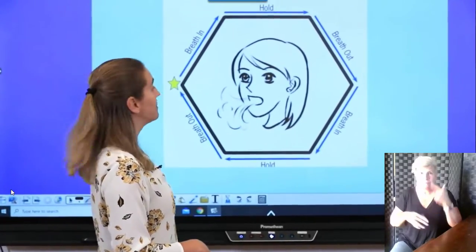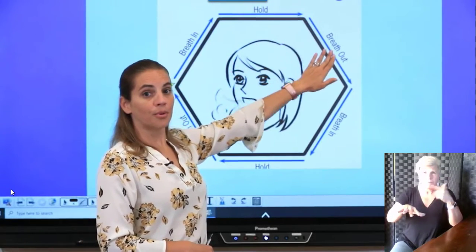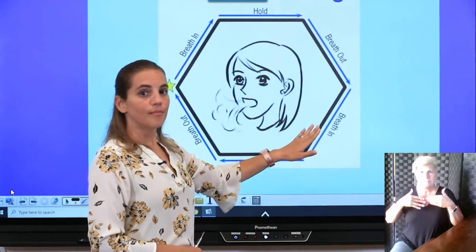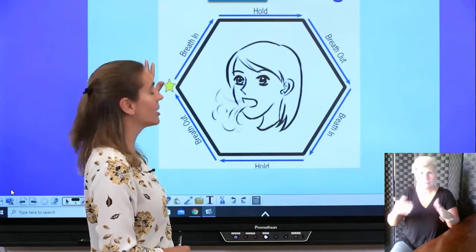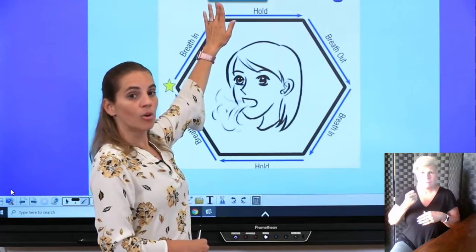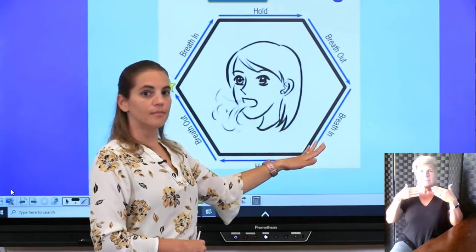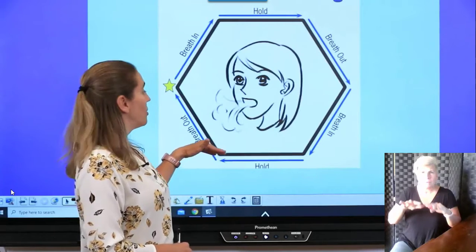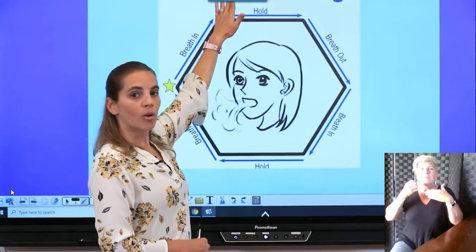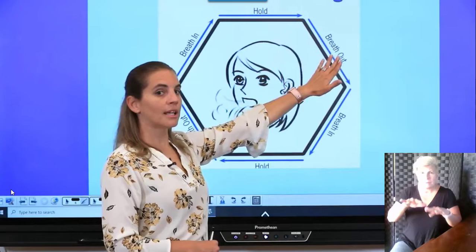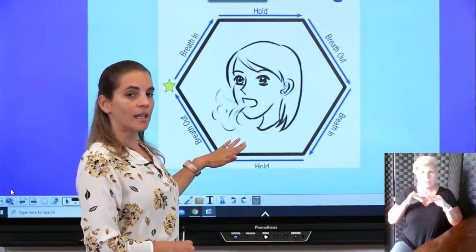Here we go. Deep breath in... hold that breath and let it out. Let's do that again. Deep breath in... hold and now let it out. Let's go around again — deep breath in... hold that breath, now let it out. Deep breath in... hold it, let it out. One more time, make this your best — big deep breath in... hold that breath, let it out and relax.